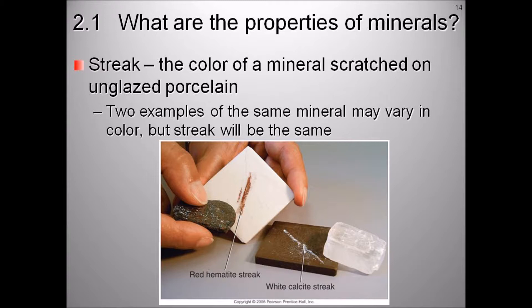Streak is the color of the mineral residue after it has been scratched on an unglazed porcelain plate. Each mineral has a unique streak regardless of its variety. Streaks are generally black, dark gray, red, brown, or white. The mineral hematite will streak red and the mineral calcite will streak white.